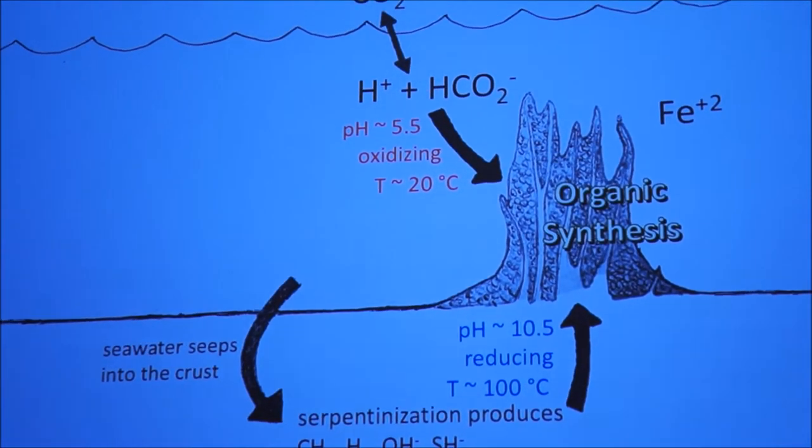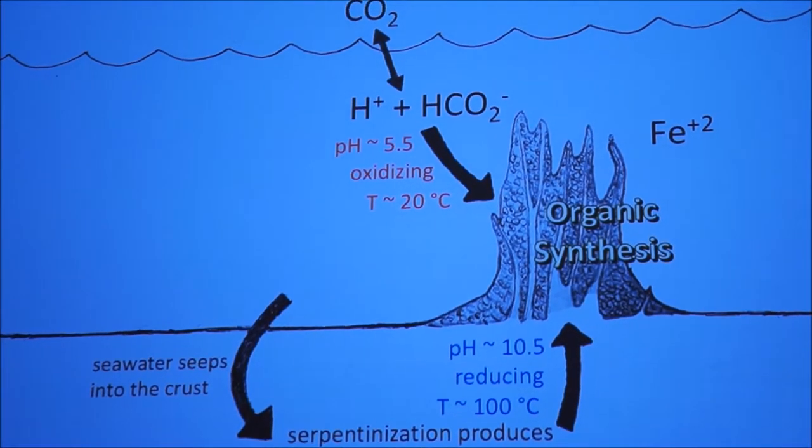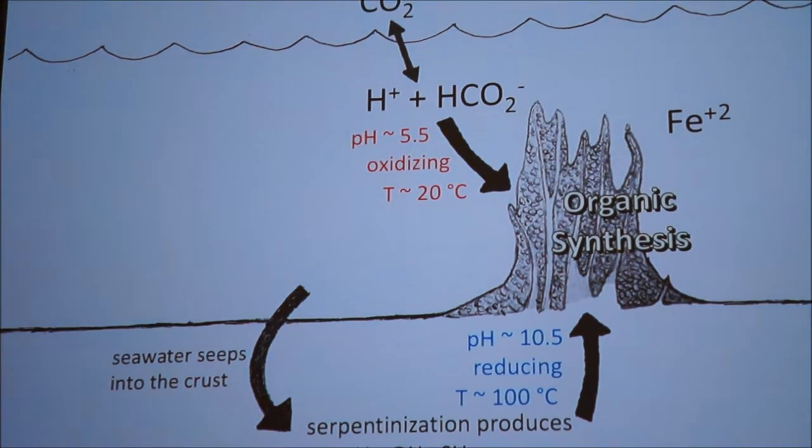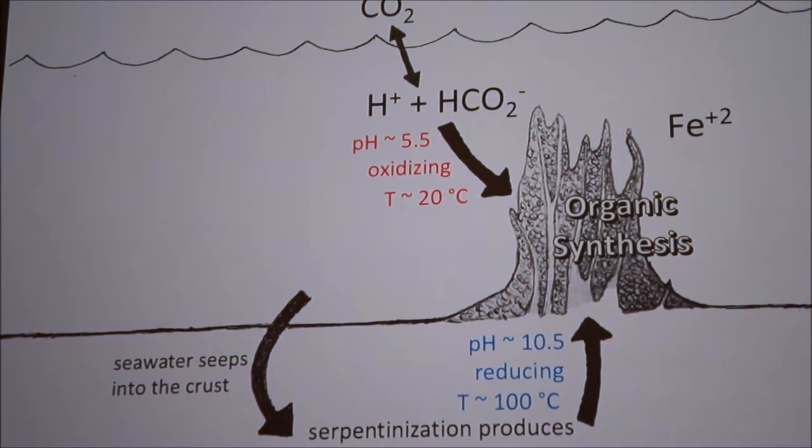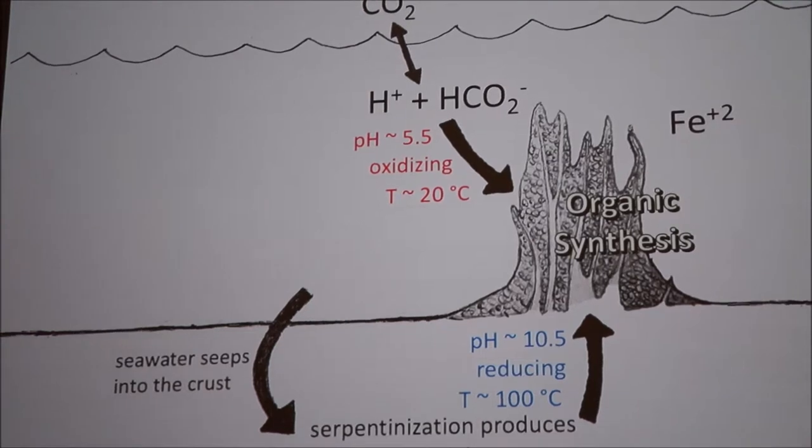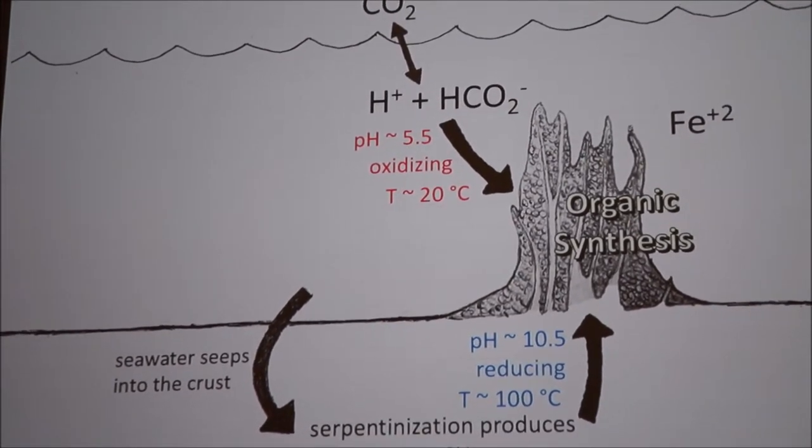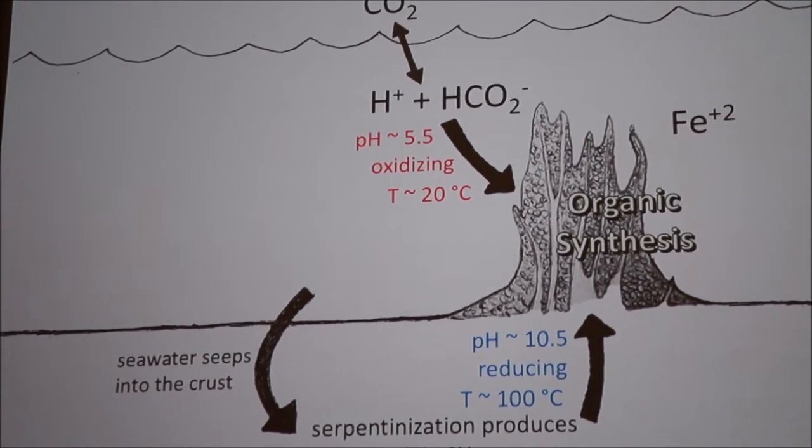So how do these work? Imagine we're on some ocean world that has a water-rock interface. First we get seawater seeping down into the crust where it can react with minerals such as olivine and pyroxene in order to produce an alkaline reducing fluid.